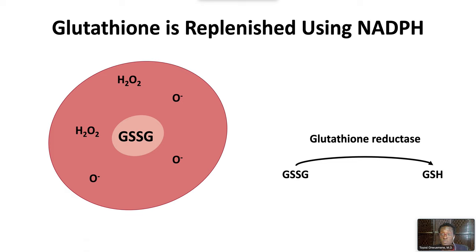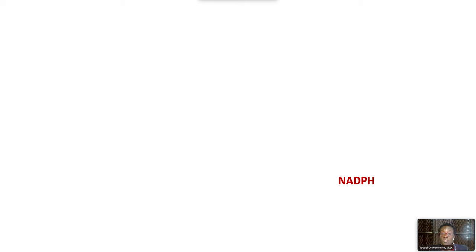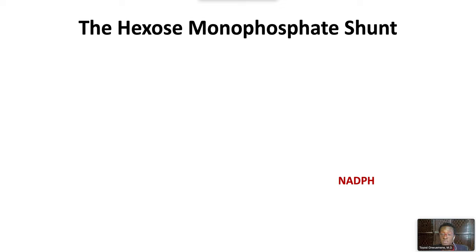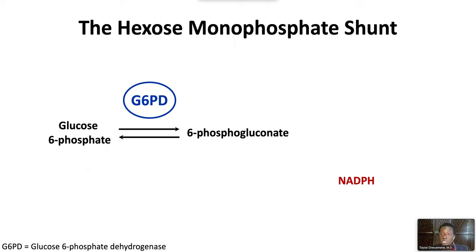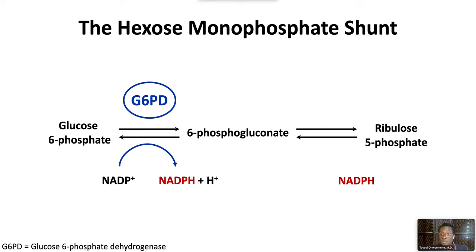This reaction requires NADPH. The only red cell source of NADPH is the hexose monophosphate shunt. In this pathway, the initial step is a conversion of glucose 6-phosphate to 6-phosphogluconate, which is catalyzed by glucose 6-phosphate dehydrogenase, or G6PD. G6PD also reduces NADP to NADPH. 6-phosphogluconate then converts into ribulose 5-phosphate, and NADPH gets produced again as a byproduct.